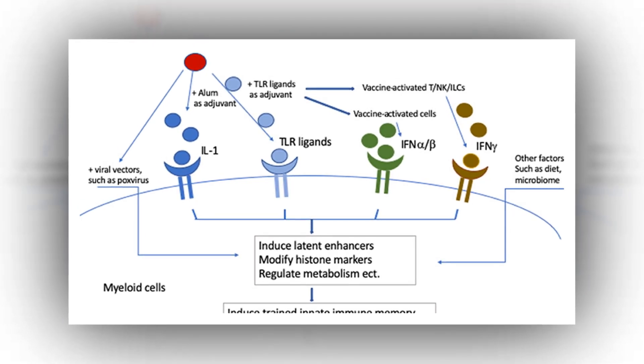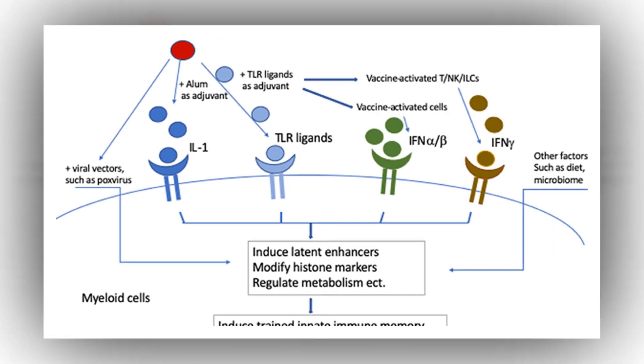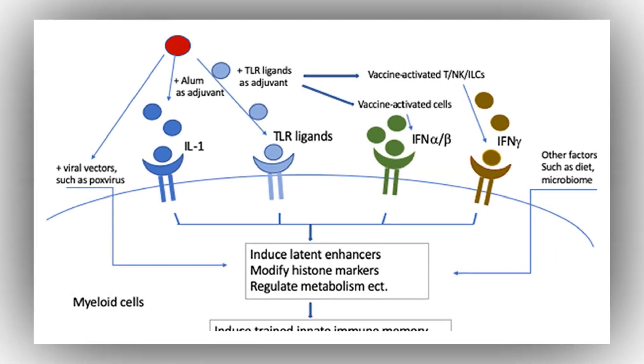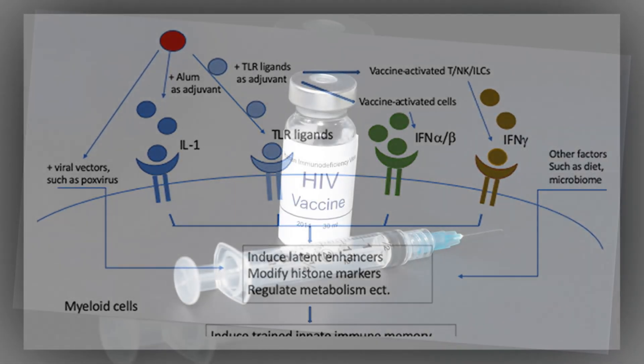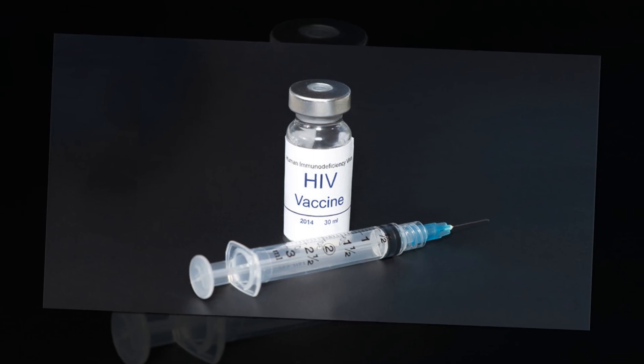The following year, researchers reported that the vaccine also stimulated strong HIV-specific T cell responses in most study participants. Those findings showed that the GT8 60-mer primer vaccine can kick-start the process of bnAb production.